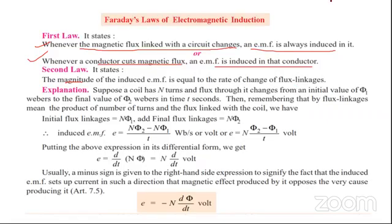Explanation: Suppose a coil has N turns and flux through it changes from an initial value of φ₁ to the final value of φ₂ in time t seconds. Remembering that by flux linkage we mean the product of number of turns and flux linked in the coil, initial flux linkage equals Nφ₁ and final flux linkage equals Nφ₂. Induced EMF equals the rate of change of flux linkage.